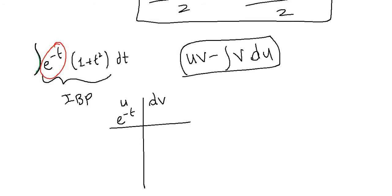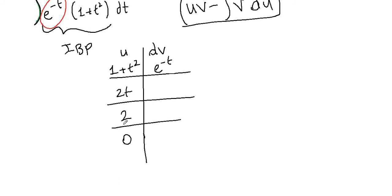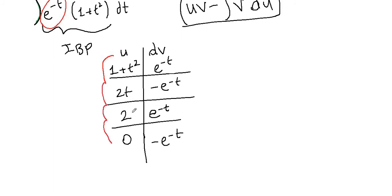We pick e^(-t) as our dv because it is easy to integrate, and (1 plus t squared) as our u because it is easy to differentiate. In the tabular method, we take derivatives of u: derivative of (1 plus t squared) is 2t, derivative of 2t is 2, derivative of 2 is 0 — we stop at 0. We integrate dv: integral of e^(-t) is negative e^(-t), integral of that is positive e^(-t), and integral of that is negative e^(-t).